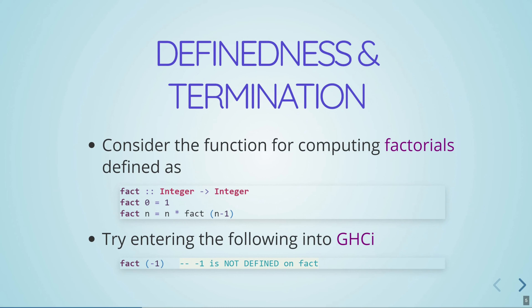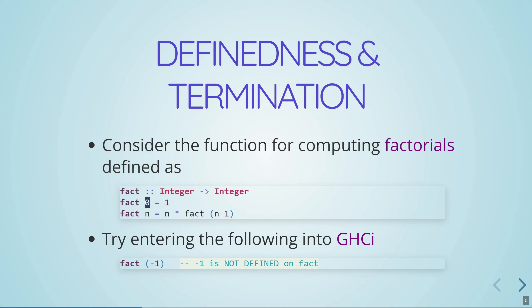Another pitfall has to do with definedness and termination. To consider what these are, let's look at the function `fact`. `fact 0 = 1`, and `fact n = n * fact (n - 1)`. If we call `fact` on a negative number like negative one, what's going to happen is `fact` is going to infinitely recurse — it'll keep calling `n - 1`, and it's never going to reach zero. So we say `fact` does not terminate on negative one, and that `fact` is not defined on negative one.